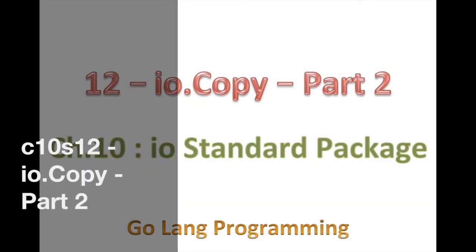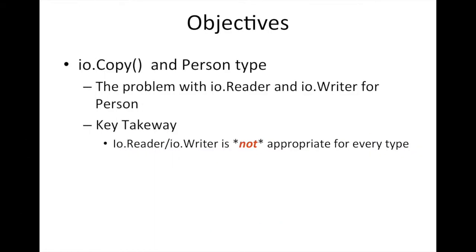Today we're going to look at using IOCopy again. Previously, we used IOCopy with our memstore, which was like a file-like object, a user-defined data type. We also had another data type we've been using, which is person. We had implemented IOReader and IOWriter for it, and we were fairly happy because we were able to take a person, populate it, and have that encoded in some bytes, which we can then use to shove over the wire or shove into a file. And then we can take those bytes and turn them back into a valid person object.